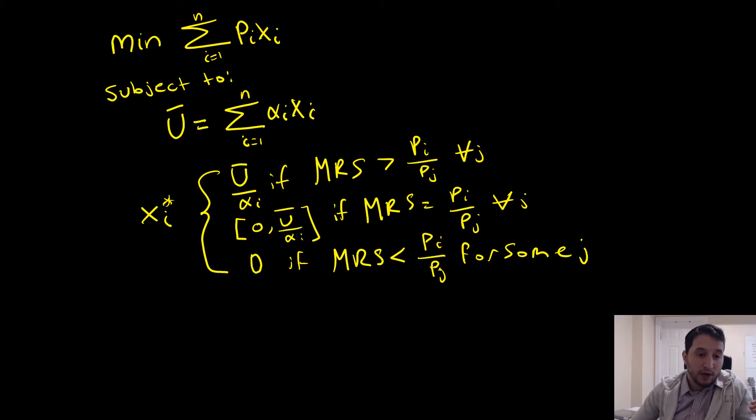In general, we're going to have this awkward sort of piecewise function where our Hicksian demand equals u bar over alpha i if our marginal rate of substitution is greater than our price ratio for all j. It's going to be lying on an interval if the price ratio and the marginal rate of substitution for every price of good j is equal to each other. It's going to be zero if our marginal rate of substitution is less than pi over pj for some j.